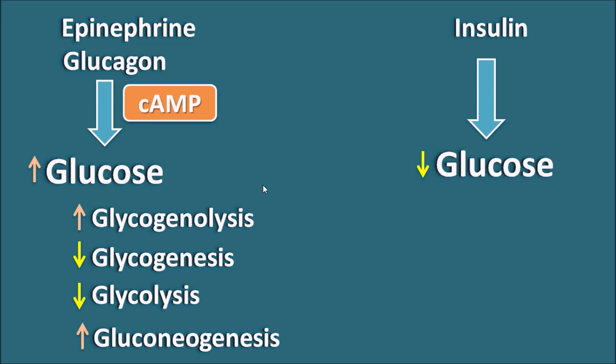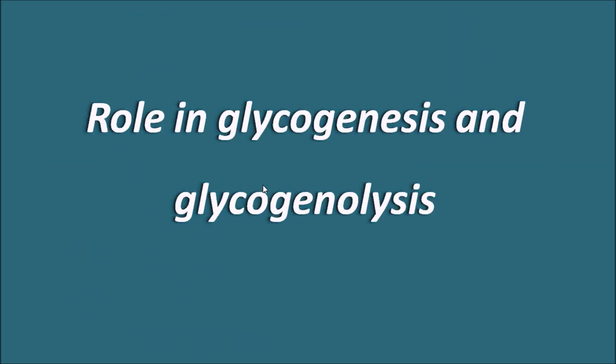Epinephrine can also increase glucose levels by affecting insulin. Epinephrine can inhibit the release of insulin, thereby also increasing glucose levels. Now let us see the role of cyclic AMP in glycogenesis and glycogenolysis.